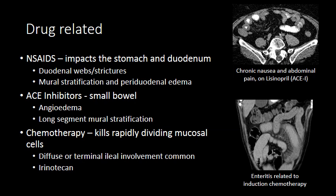A commonly forgotten etiology for small bowel inflammation is drug-related inflammation. Non-steroidal anti-inflammatories tend to affect the stomach and duodenum rather than the jejunum or ileum, and can result in duodenal webs and strictures, peptic ulcer disease, and mural stratification within the duodenum. Since the duodenum is less frequently involved with infectious enteritis or immunocompromised-related etiologies, think of NSAIDs as a common etiology when you see edema within the duodenum.